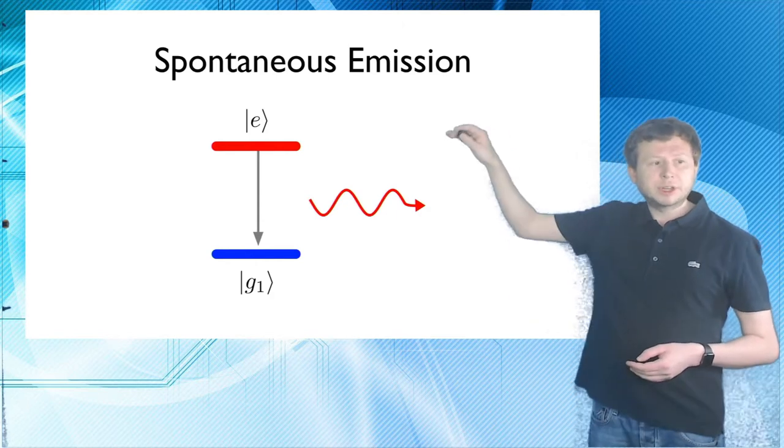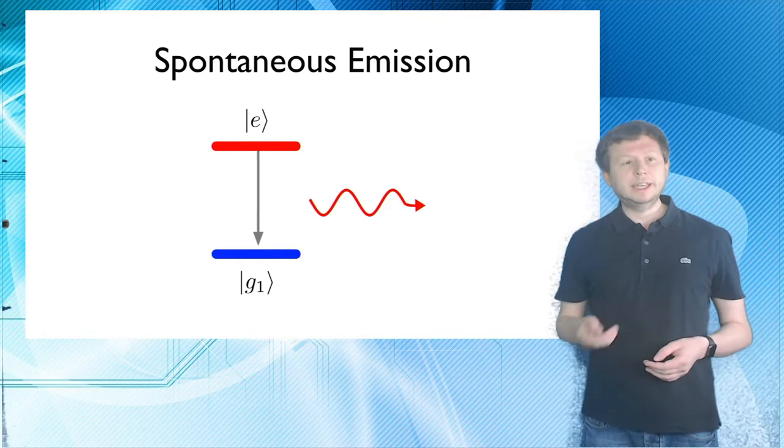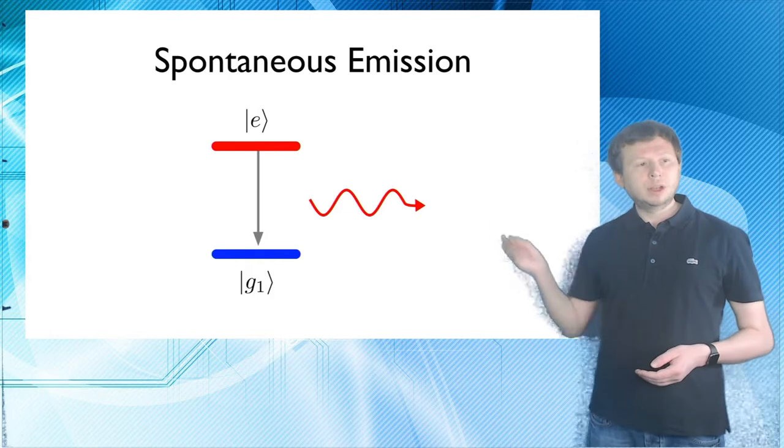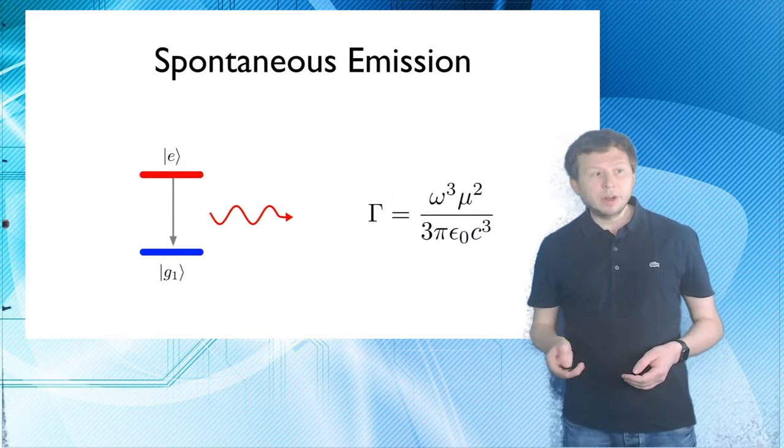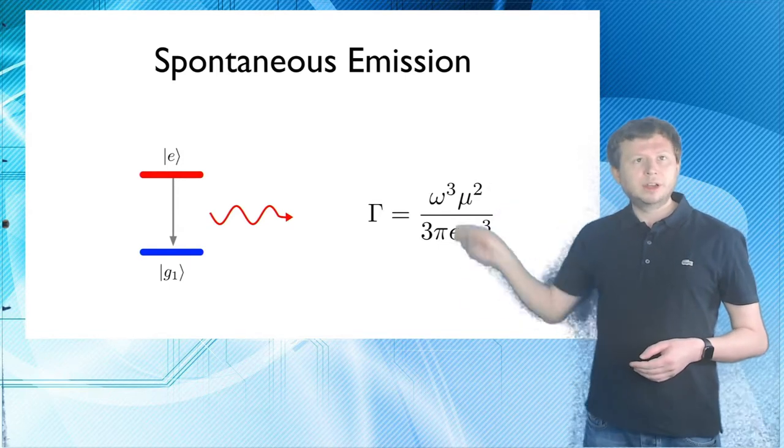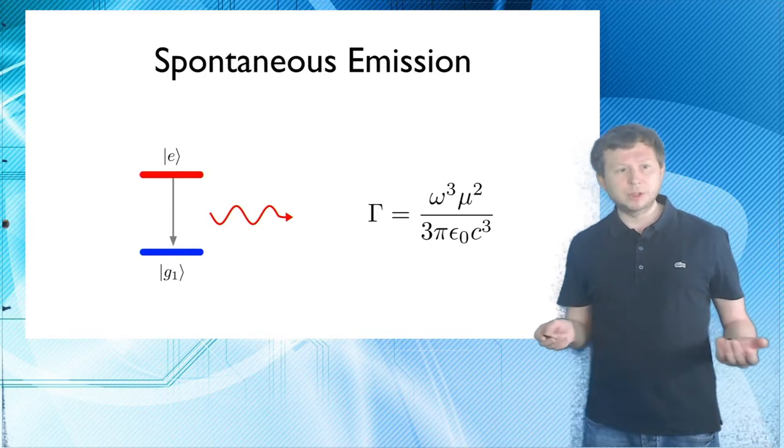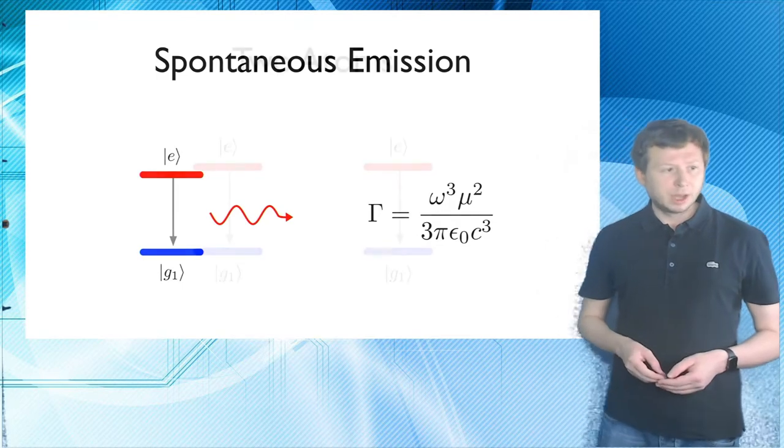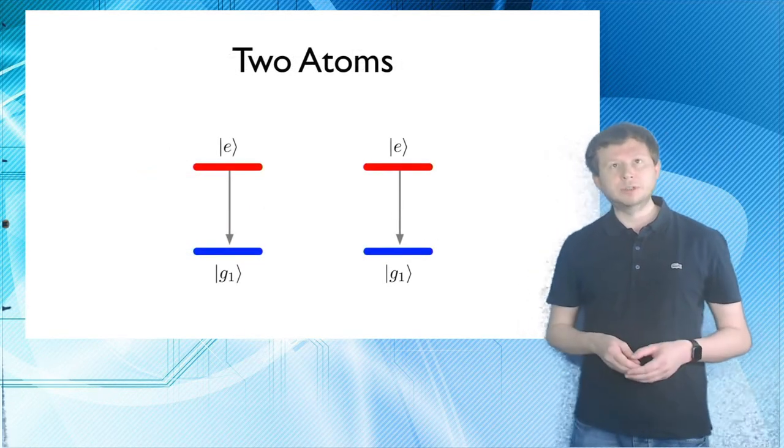So we all know this – you have an excited state and a ground state and when the excited state decays to the ground state, of course the emitter is coupled to the electromagnetic vacuum. You will emit a photon and this happens with a rate of gamma, where gamma scales cubically with the transition frequency and quadratically with the transition dipole moment. Of course we all know this, this is the Weisskopf-Wigner result from the 1930s. But you can go further and as I said,